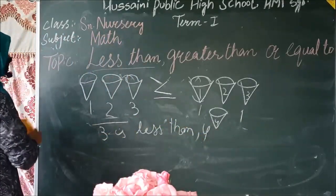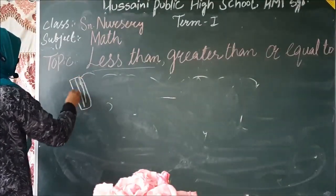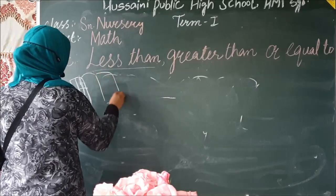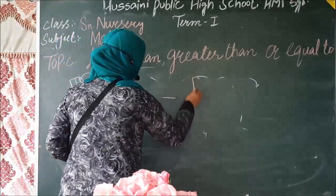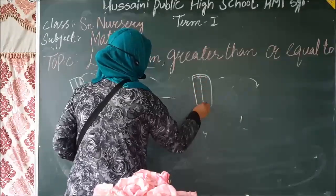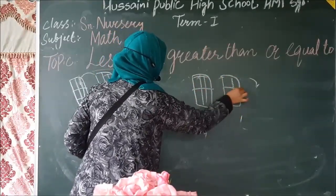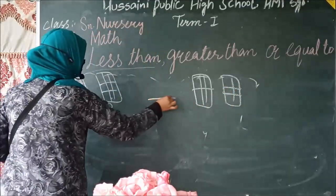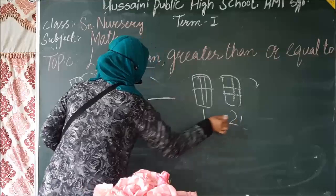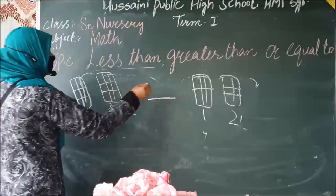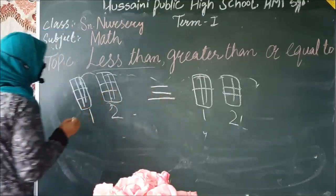इसके बाद अगर आपके पास दो chocolates हैं और आपकी बहन के पास दो chocolates हैं, तो दोनों के पास बराबर है — one, two। तो किसी के पास कम या ज्यादा नहीं है, दोनों के पास बराबर है। तो हम इसमें equal to की sign डालेंगे।